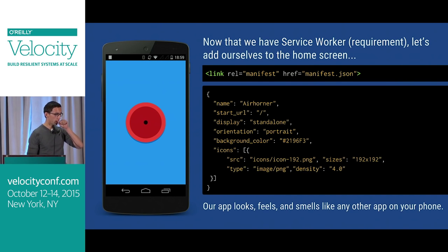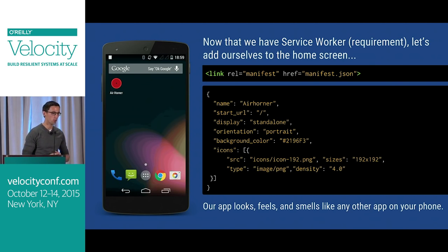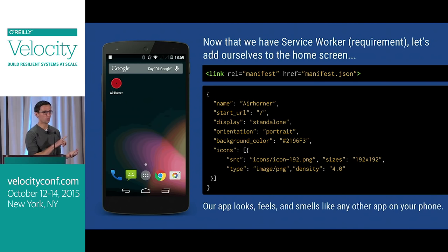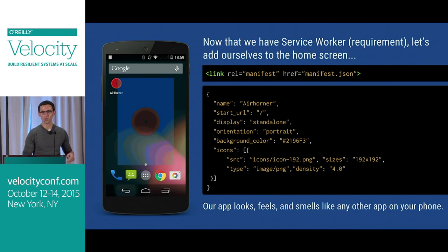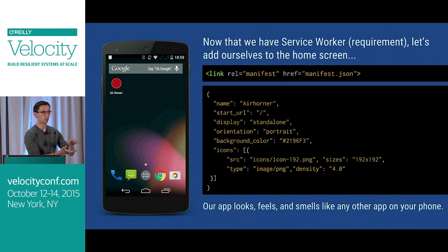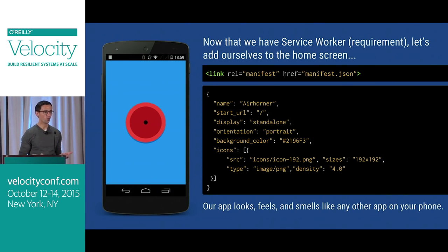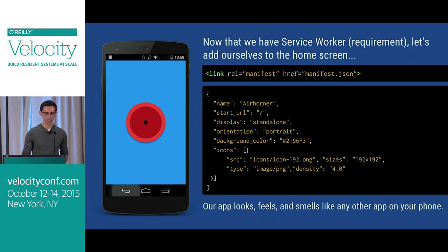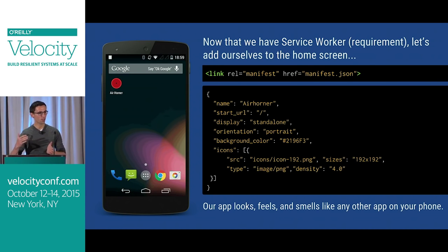This is not Service Worker specific, but now that we're talking about offline apps, we can put ourselves onto the home screen. We are an app — we don't need network access. We have the manifest spec, which is just a JSON file that tells you the name of the app, gives you nice looking icons, and requires a Service Worker. If you put this into your page, Chrome will throw up a prompt to the user saying, would you like to add this to your home screen? And once it's on your home screen, it looks and feels like any other app. You cannot tell anything about how it's implemented under the hood, except it's all web technology. And you didn't have to go into the app store or click an install button — it's all happening in the background progressively.